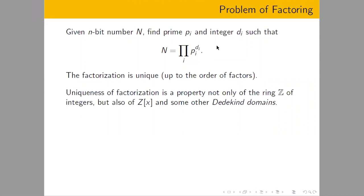The property that factorization is unique is important because it doesn't exist everywhere. In fields, every element is divisible by anything else and can have infinitely many representations. It's a property of the ring of integers, the ring of polynomials, and some other so-called Dedekind domains, which include some algebraic fields where you add roots of certain polynomials or square roots of negative numbers.